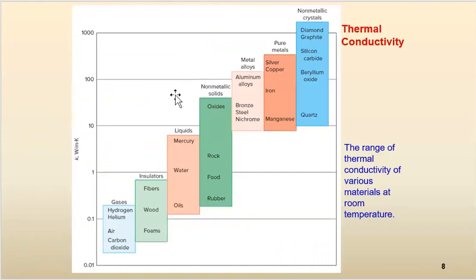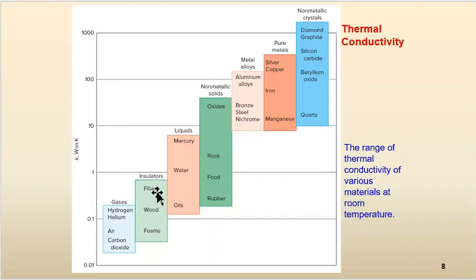Looking at the thermal conductivity chart as we change materials: pure metals have a very good range of conductivity, while fibers and insulators are very low in conductivity. That's why we use these materials to insulate houses, systems, and some parts of power plants. Gases also have very low conductivity.